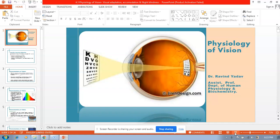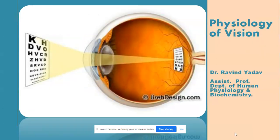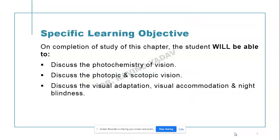Welcome back, dear learners. We are in the special senses series, especially on the eyes — that is, vision. Today's topic is the physiology of vision, or the photochemistry of vision, present in the rods and cones. I'm Dr. Rebindadav, assistant professor in the Department of Human Physiology and Biochemistry. I request you to stay till the end so that your concepts will be very clear after watching this video.